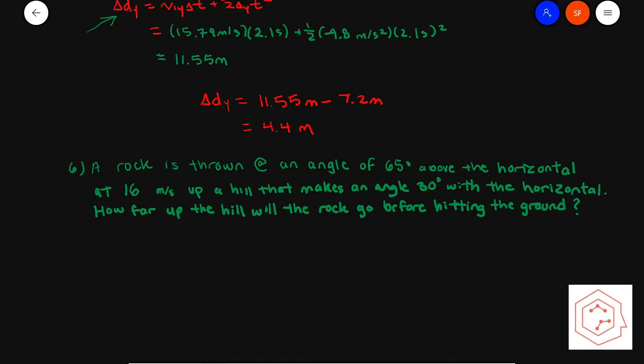Hi guys, so today we're going to be continuing on projectile motion, continuing where we left off with the Nelson chapter 1.5 questions, starting off with number six. A rock is thrown at an angle of 65 degrees above the horizontal at 16 meters per second up a hill that makes an angle of 30 degrees with the horizontal. How far up the hill will the rock go before hitting the ground? Just creating a quick sketch of this problem.